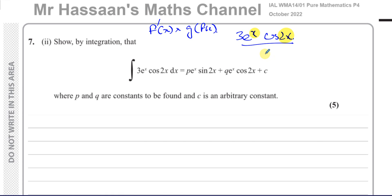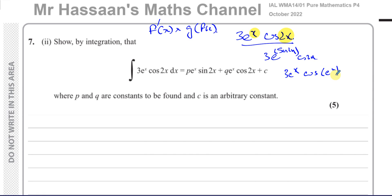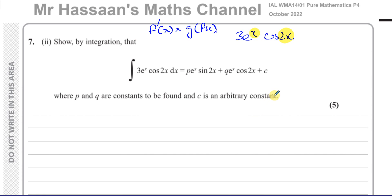For example, if we had sine(2x) times cosine(2x), it would be the right form because sine(2x) is the derivative of what's inside cosine. Or if it were 3e^x times cosine(e^x), that would also work. But in this case, we have a product of two completely separate functions, so we have no choice but to use integration by parts.